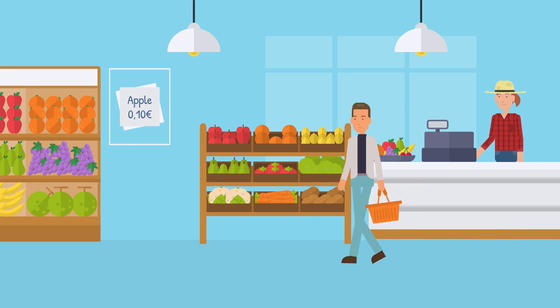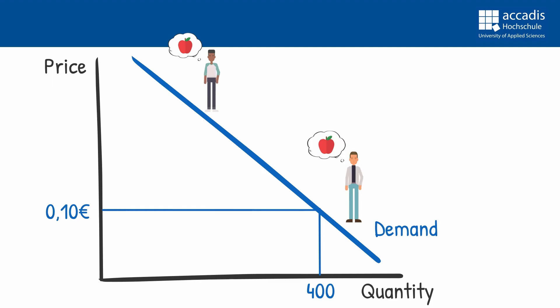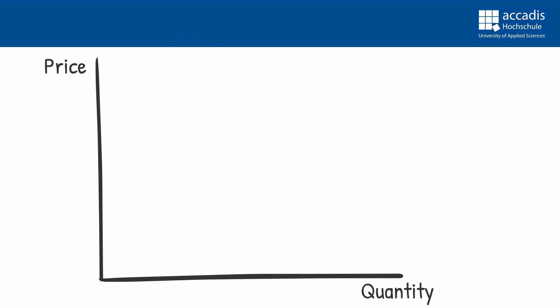Also, those who usually prefer ice cream or candy bars will now buy apples and hence a higher quantity will be traded on our market, for example 400. What the exact shape of this curve will be will always depend on the assumptions that we make about our good. For example, the so-called elasticity, so how strong will demand react to price changes plays a large role here.